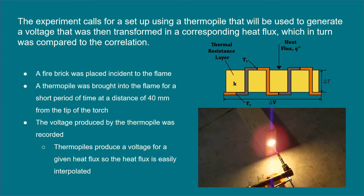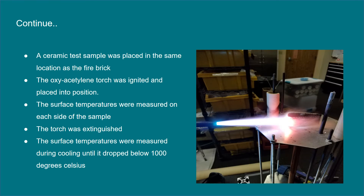We began the setup using a fire brick placed about 40 millimeters away from the torch. Once we ignited the torch, we timed the temperature change during heating and cooling and recorded the voltage reading from the thermopile to convert it to a heat flux. After that, we replaced the fire brick with the composite material test sample at the same distance from the torch, then recorded surface temperature readings during heating and cooling.